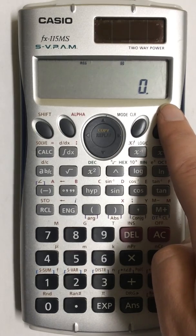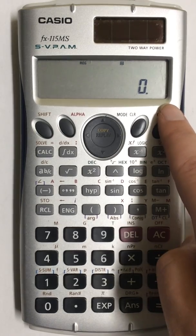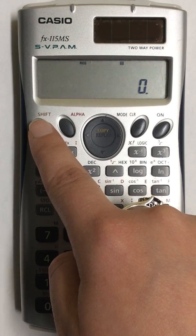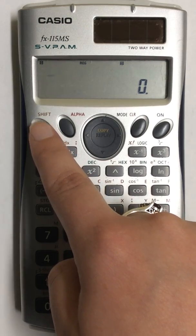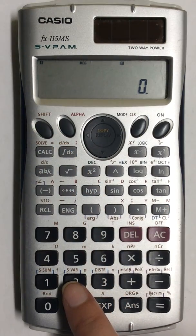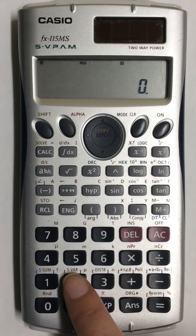To find the values for your regression line first press your shift button and then come down here to number two SVAR.